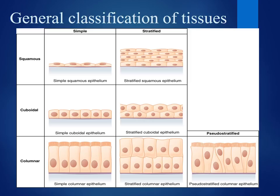We're also going to have three types of layers. We have simple, meaning there is only one layer of cells; stratified, meaning multiple layers of cells; and a third type called pseudostratified, shown in the lower right corner. The prefix pseudo means false, so although it appears to be stratified, it really isn't. But because we want to be as specific as possible, we call this pseudostratified.